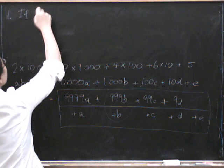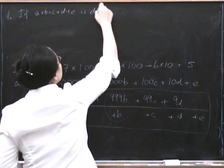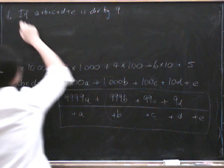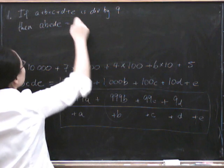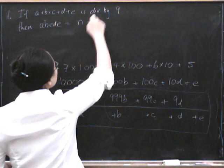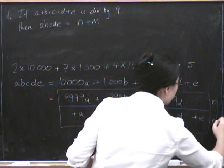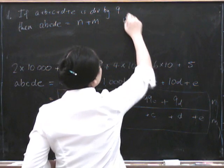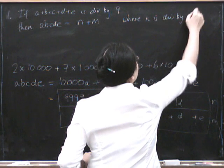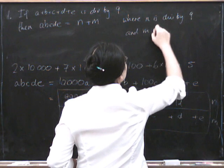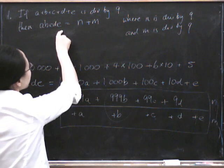So first of all, if A plus B plus C plus D plus E is divisible by 9, then ABCDE equals N plus M, right? Where this top part, I'm calling this top part N, and this bottom part is M, where N is divisible by 9, and M is divisible by 9. And if you add two things that are both divisible by 9, then the answer must be divisible by 9.